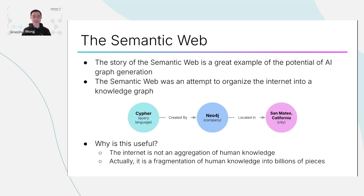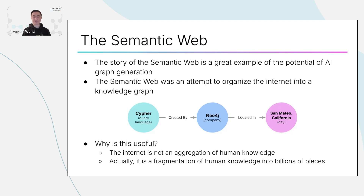Using AI to create knowledge graphs is a really exciting area. We can look back at the promise of the semantic web from the early 2000s to see why. The semantic web was an attempt to organize the internet into a knowledge graph. In the semantic web sense, a knowledge graph is a collection of typed entities — for example, Cypher is a type of query language, or Neo4j is a type of company — and named relationships between those entities.